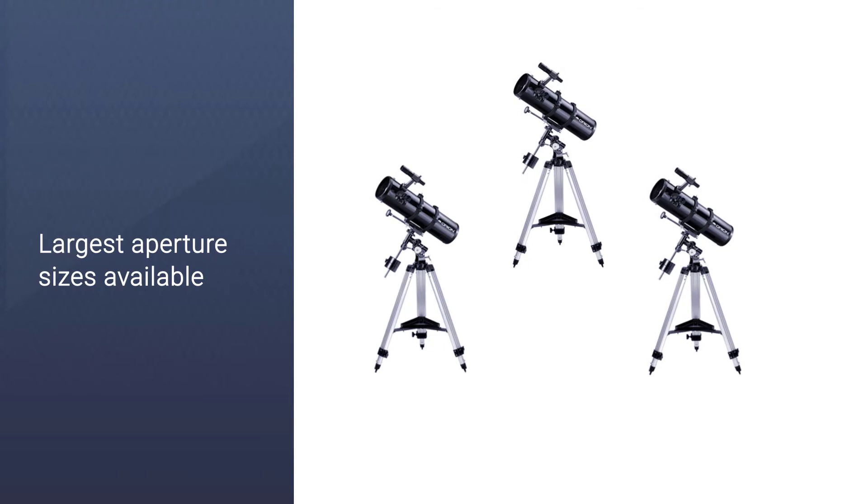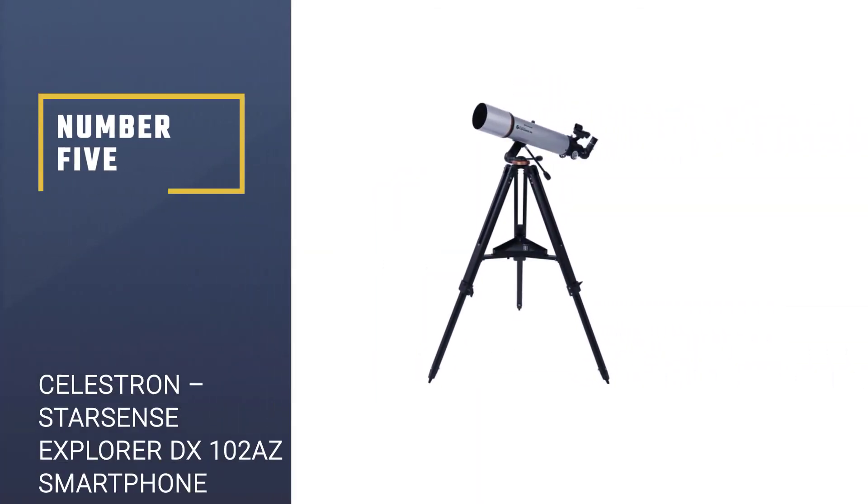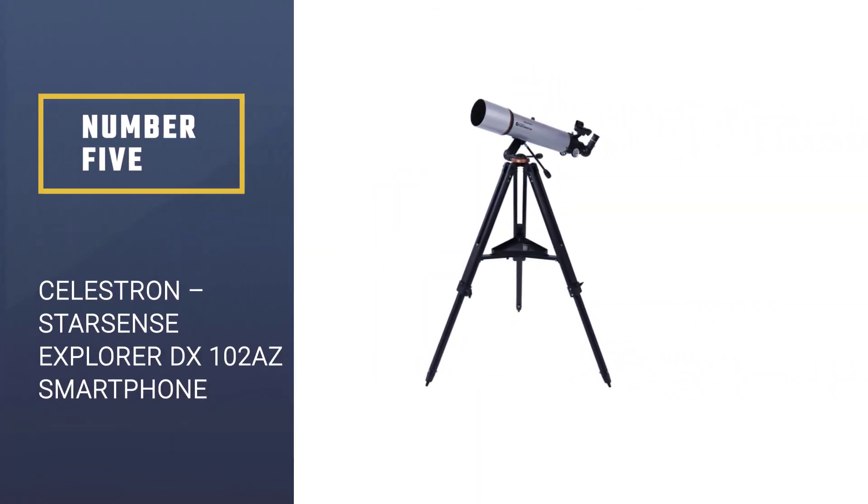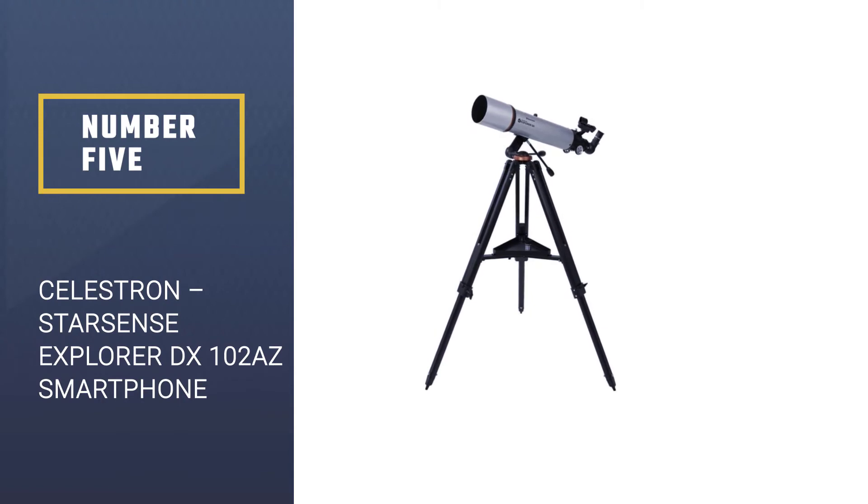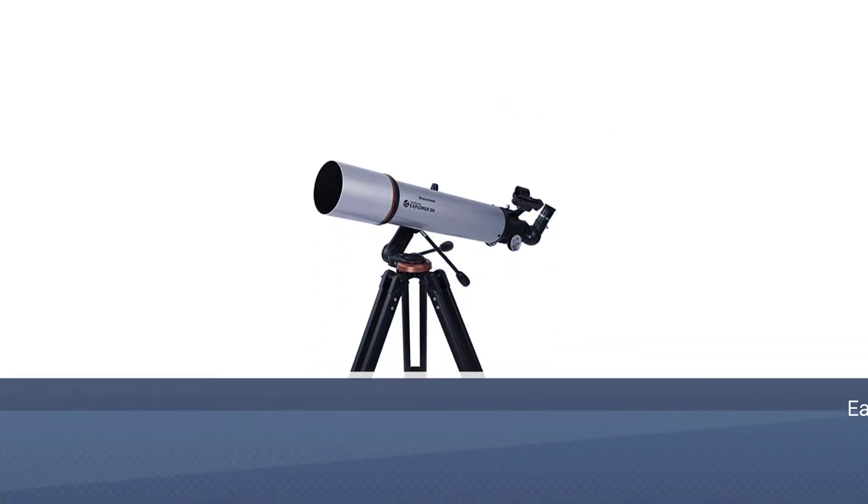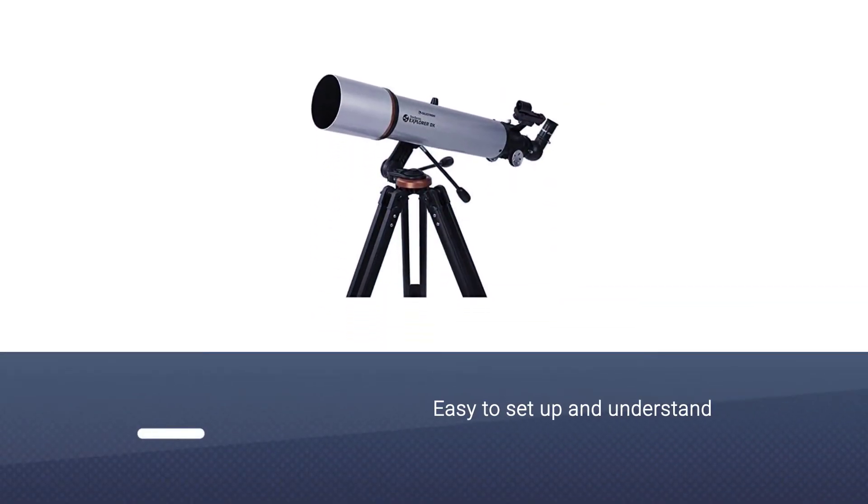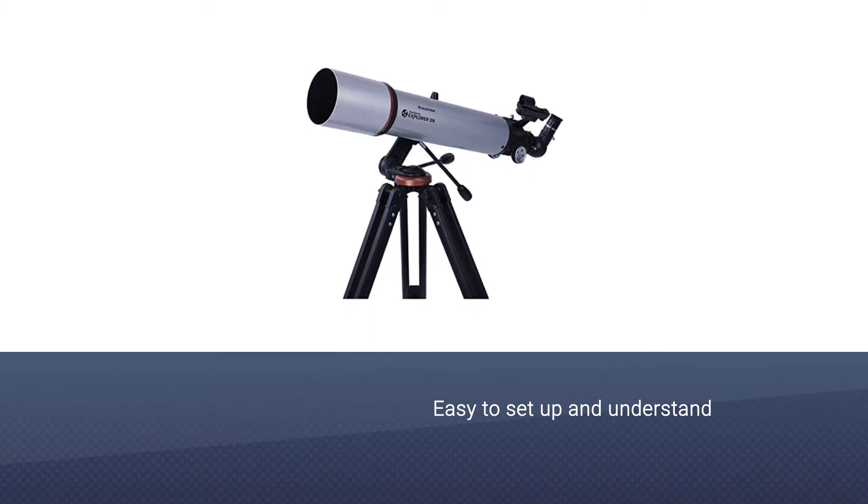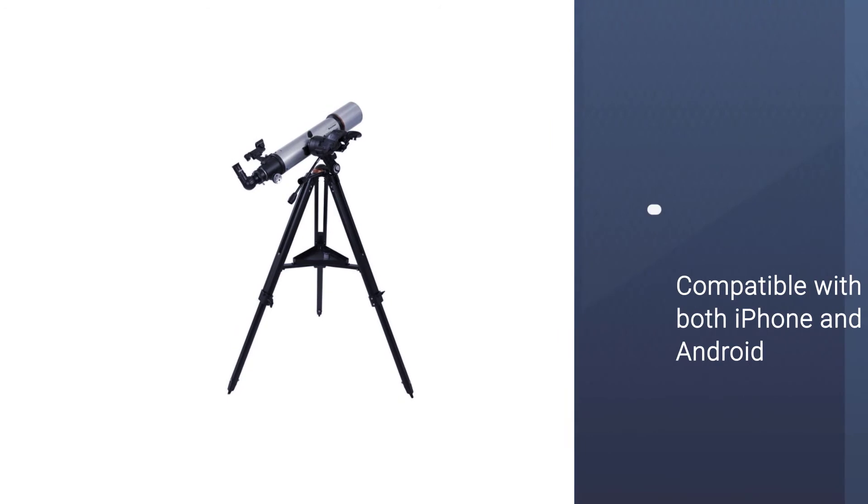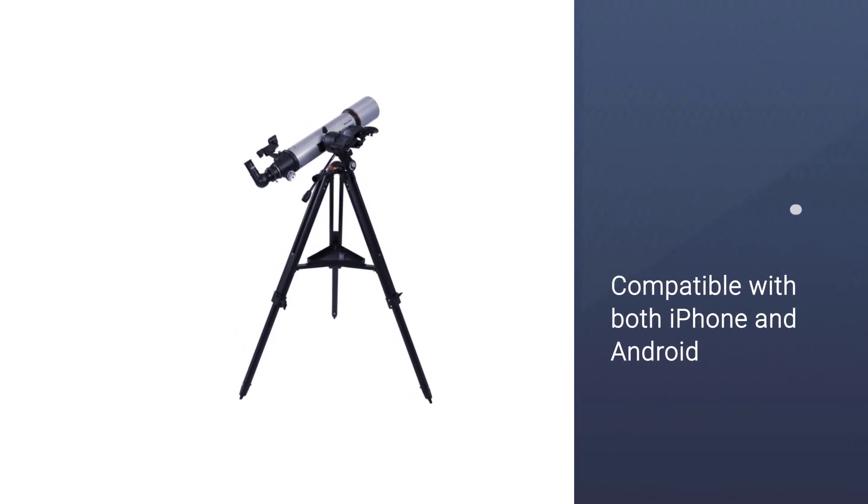Number five: Celestron StarSense Explorer DX 102 AZ Smartphone App Enabled Telescope. The Celestron StarSense Explorer is easy to set up and understand. The telescope has a feature that allows you to connect your mobile with it and see the planets and stars by following the arrows.